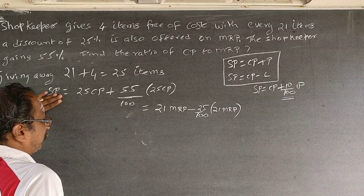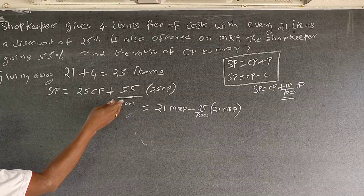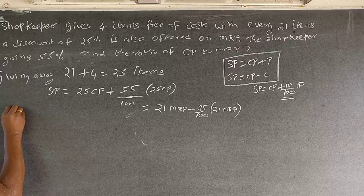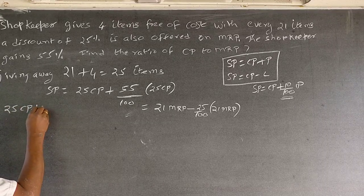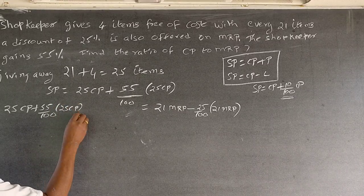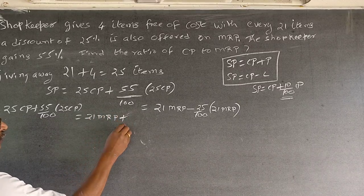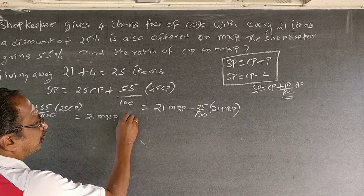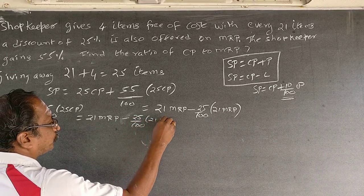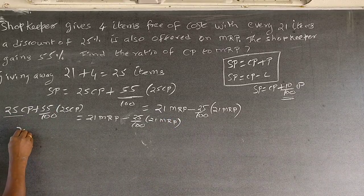Now we solve this. The SP expression is not needed separately because we have two expressions in CP and MRP which we equate directly. So: 25 CP plus 55 by 100 of 25 CP equals 21 MRP minus 28 by 100 of 21 MRP.